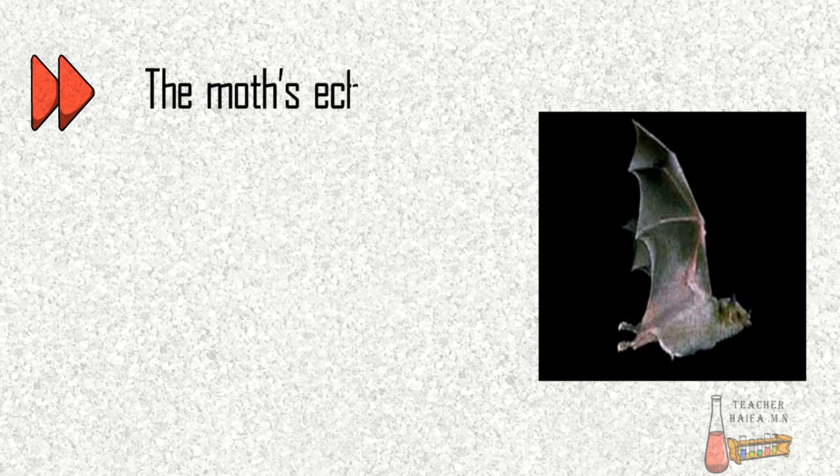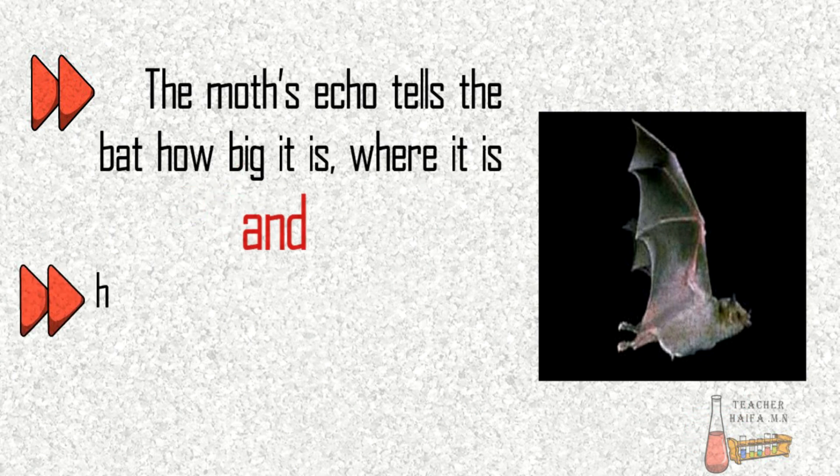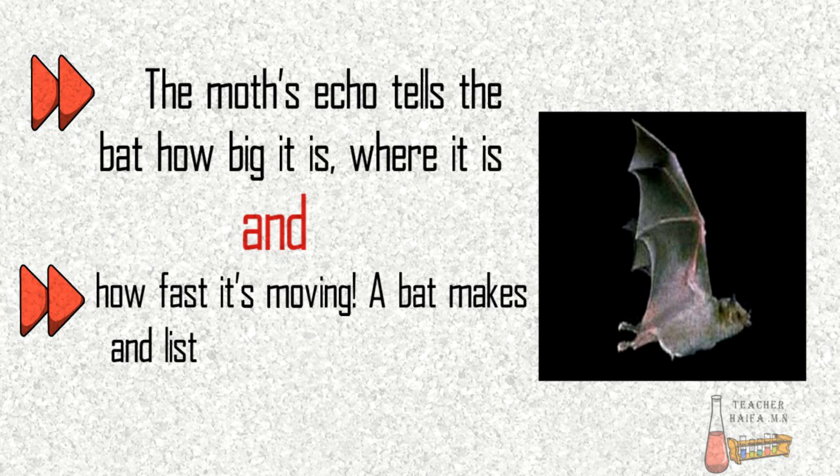The moth's echo tells the bat how big it is, where it is, and how fast it's moving. A bat makes and listens for the echoes of ten or more chirps every second.